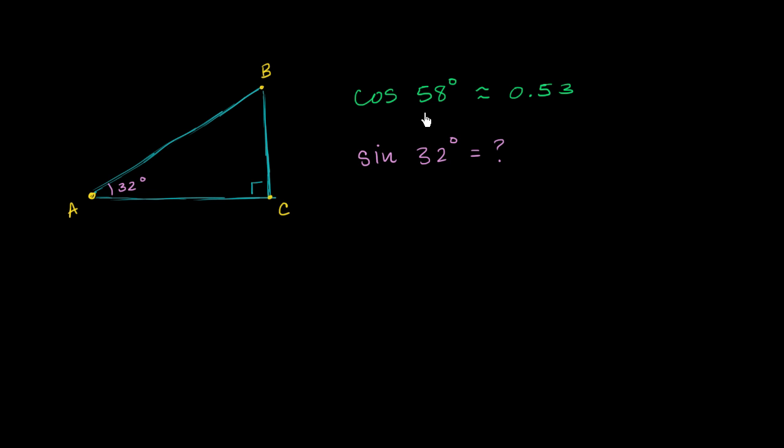We are told that the cosine of 58 degrees is roughly equal to 0.53, because it just keeps going on and on. I just rounded it to the nearest hundredth. And then we're asked, what is the sine of 32 degrees? And I encourage you to pause this video and try it on your own.